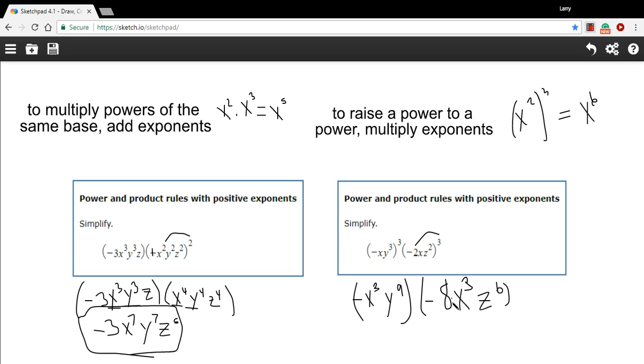Now, we're going to multiply. We'll take the number part first. I've got a negative sign here and a negative eight here. That comes out to be a positive eight. Then the x, x to the third and x to the third. Add the exponents, x to the sixth.